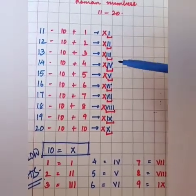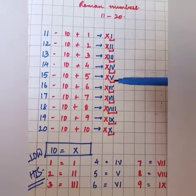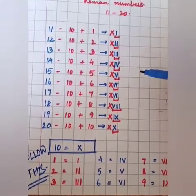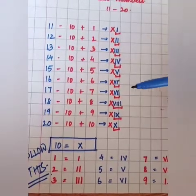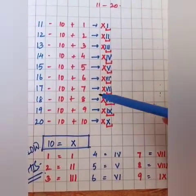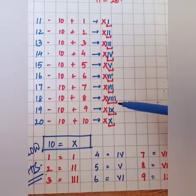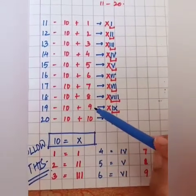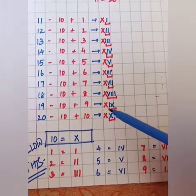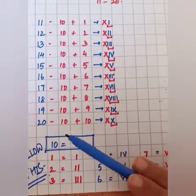For 15: 10 plus 5, so X for 10 and V for 5. For 16: 10 plus 6, so X for 10 and VI for 6. For 17: 10 plus 7, so X for 10 and VII for 7. For 18: 10 plus 8, so X, V, I, I, I — remember I repeats 3 times in 8 and won't repeat again after. For 19: 10 plus 9, so X and IX. For 20: 10 plus 10, so XX — two X's together make 20.